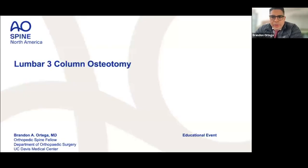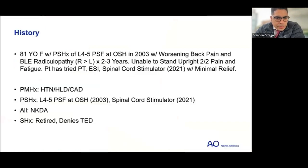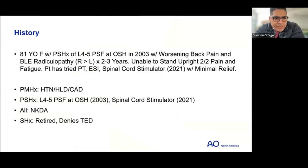So this is an 81-year-old female with a past history of an L4-L5 posterior spinal fusion performed at an outside hospital in 2003. She presented with worsening back pain and bilateral extremity radiculopathy over the last two to three years and was unable to stand upright secondary to pain and fatigue. She tried conservative management with physical therapy, epidural steroid injections, and a spinal cord stimulator in 2021 with minimal relief.